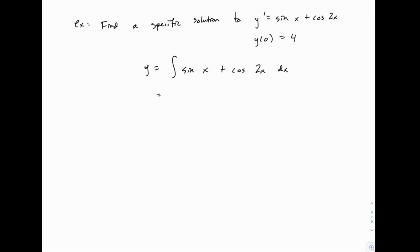And of course, integrating sine of x simply gives us negative cosine of x. Integrating cosine of 2x gives us 1 half sine of 2x, and then plus c at the end.